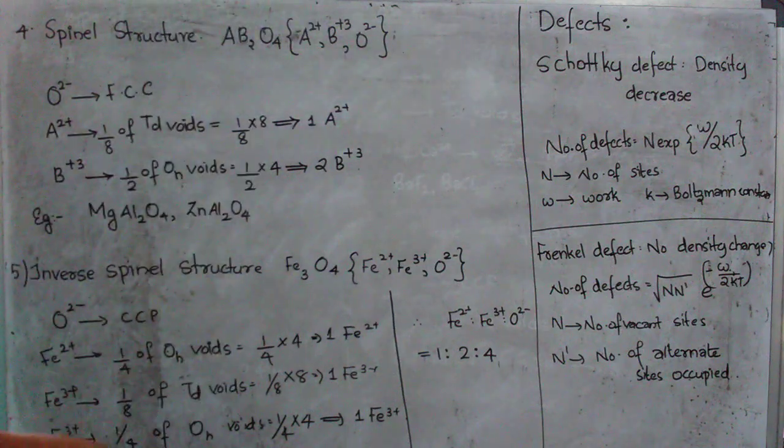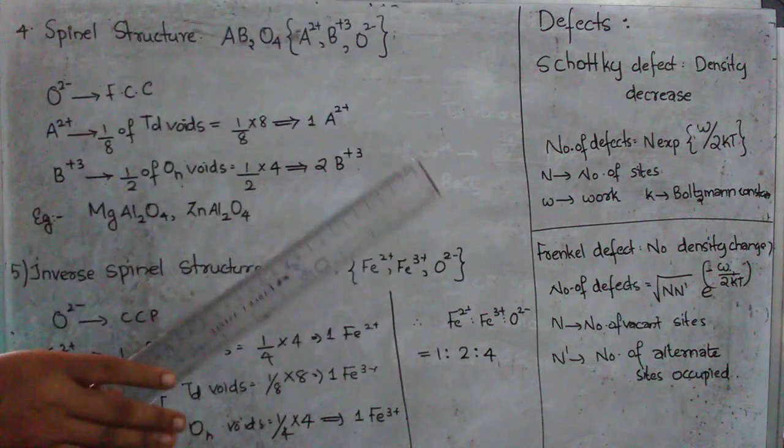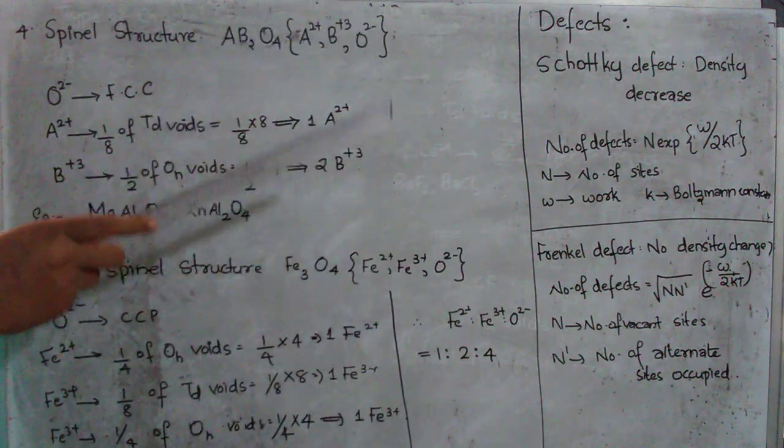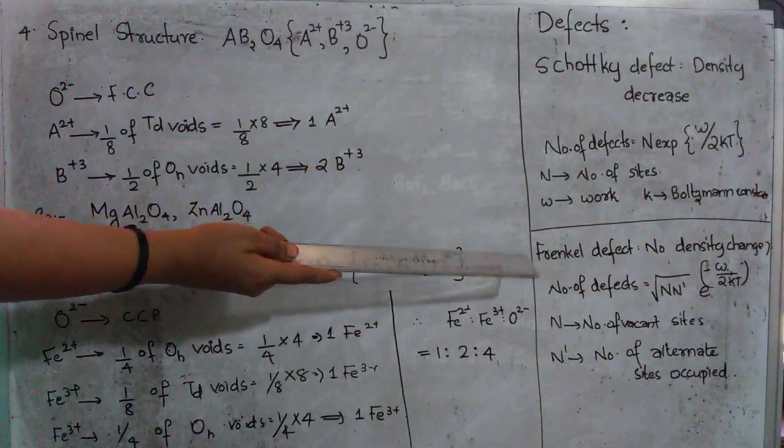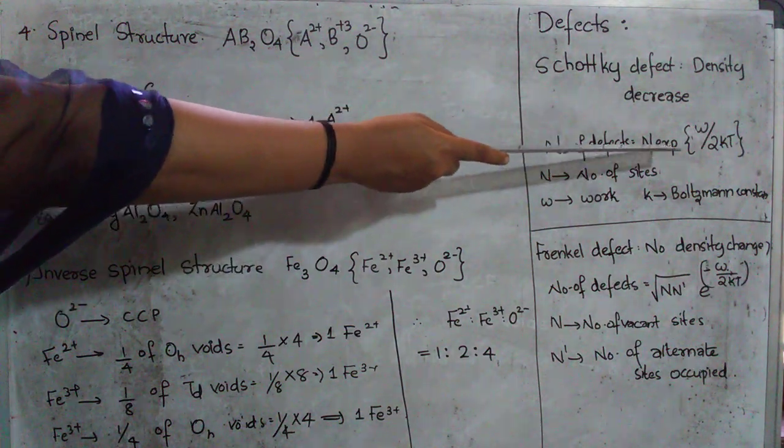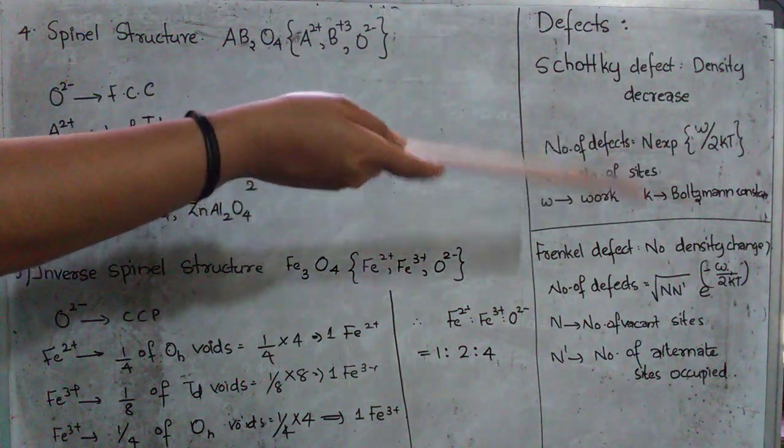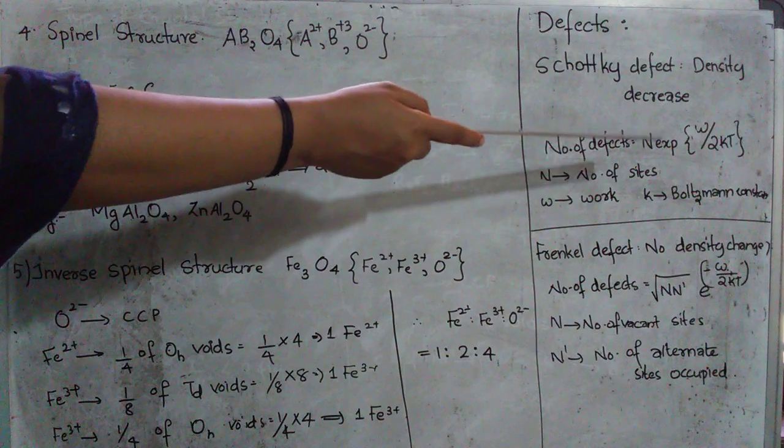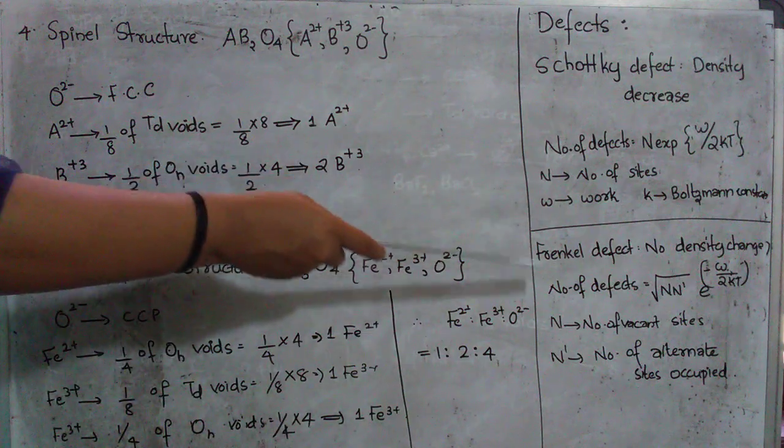Now defects. Defects, a lot of defects are present. And you should know that if there is any vacant site the density will be decreasing. And if there is no vacant site then there will not be any change in the density. Main two defects which are usually asked in exams are Schottky defects and as well as Frenkel defects. Now Schottky defects the density will be decreasing. And the number of defects can be written as N exponential -W/2kT. This is not very necessary for JEE students but for preparing JAM we can use this one. So N will be the number of sites which are vacant. W will be the work done to create those vacant sites. k will be the Boltzmann constant and T will be the temperature.